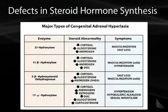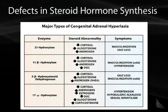The most extreme case is 17-alpha hydroxylase deficiency, where the enzyme is important for generation of all pathways including aldosterone, cortisol, and androgens. The result is decreased cortisol, decreased androgens, and decreased aldosterone, but an actual increase in DOC. Similar to 11-beta hydroxylase deficiency, these patients will have hypertension, but they will also have sexual infantilism because of absent androgens. Of these four enzyme deficiencies, 21-hydroxylase is by far the most common and most likely to be tested on boards.